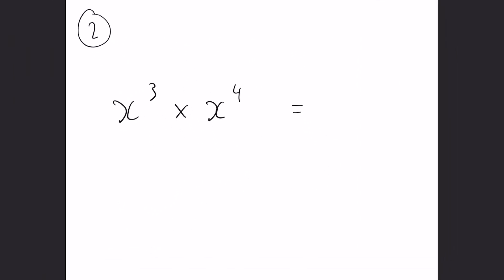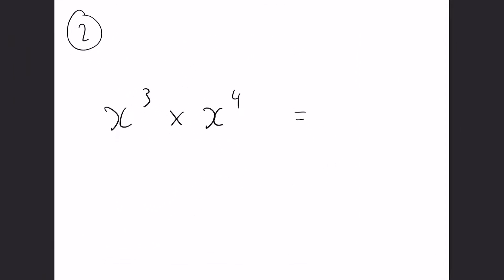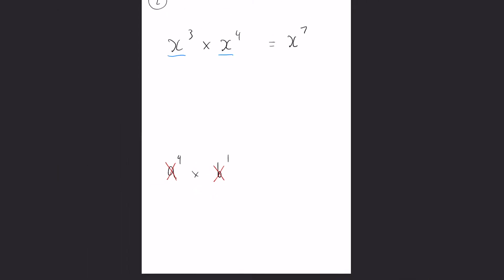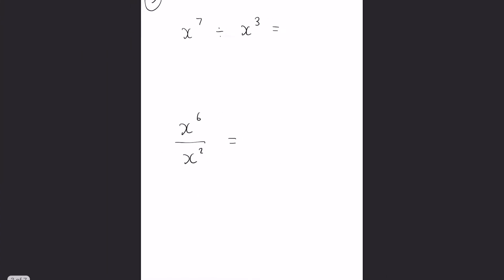Okay our second rule. So when we have the same base, so in this case the base is x, if we're timesing those together then the powers we can add up. So x cubed times x to the four will make x to the seven because three plus four makes seven. Now if we were to do it with something like this, a to the power of four times b to the power of one, you can see that these bases aren't the same so we can't do anything with that, that will stay as it is.